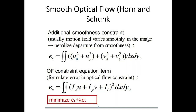The smaller the weighting factor, the more the smoothness constraint dominates. In this optimization function we take the double integral and minimize it. This is something called variational calculus. It is similar to regular calculus — in regular calculus we have a function, differentiate it, and set it to zero to find the minimum or maximum. Here we have a functional, which is a function of a function, but the basic idea is very similar.